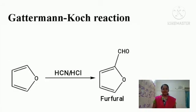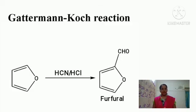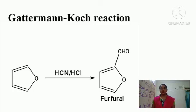When furan is treated with hydrogen cyanide in the presence of acid such as hydrochloric acid, we get an aldehyde group at the second position of furan — this product is termed furfural, and this reaction is known as the Gattermann-Koch reaction.